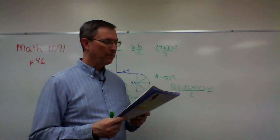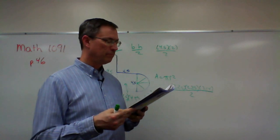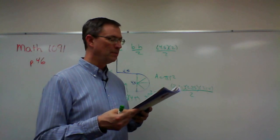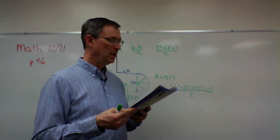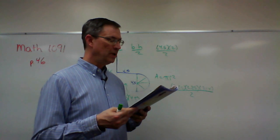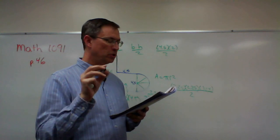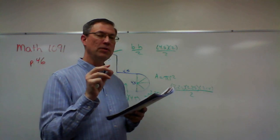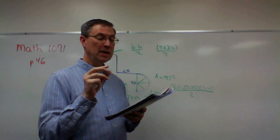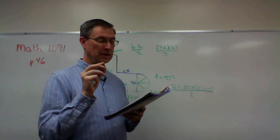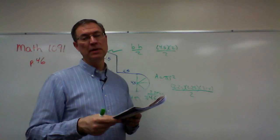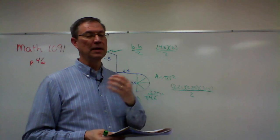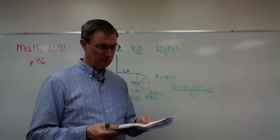The same thing happens on page 46, number one, number three, number four. You have all these separate shapes and you need to think of each of them and their formula, calculate the area of each piece of it, and then add them together.